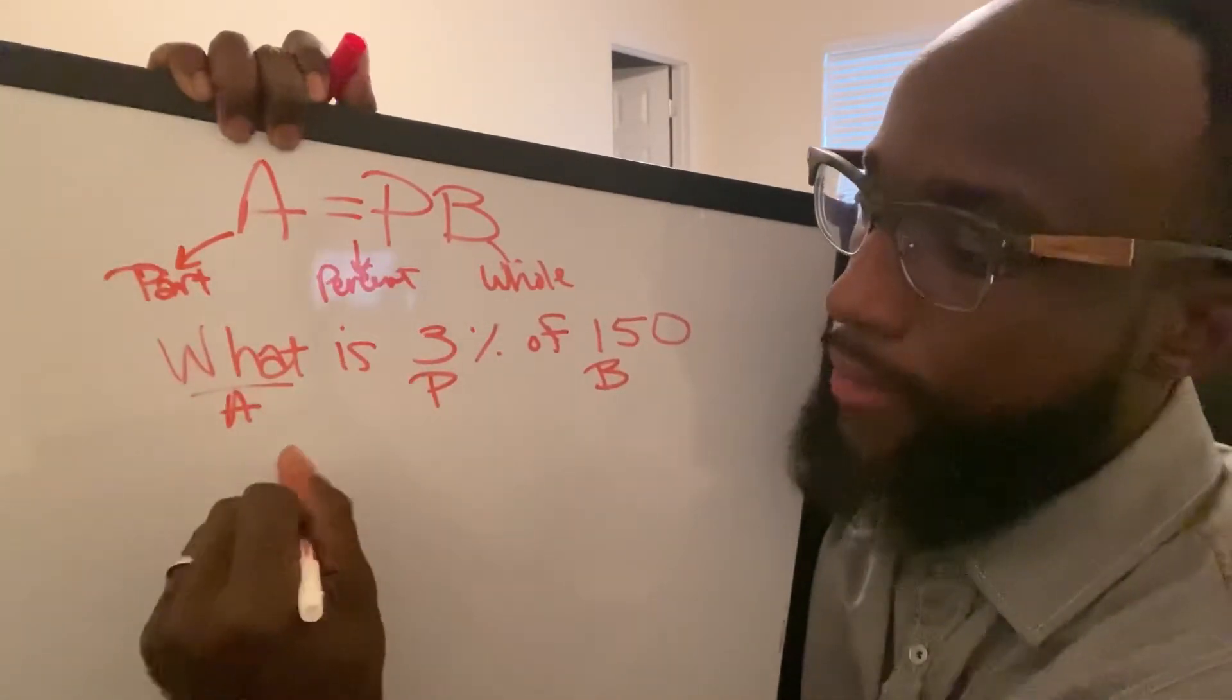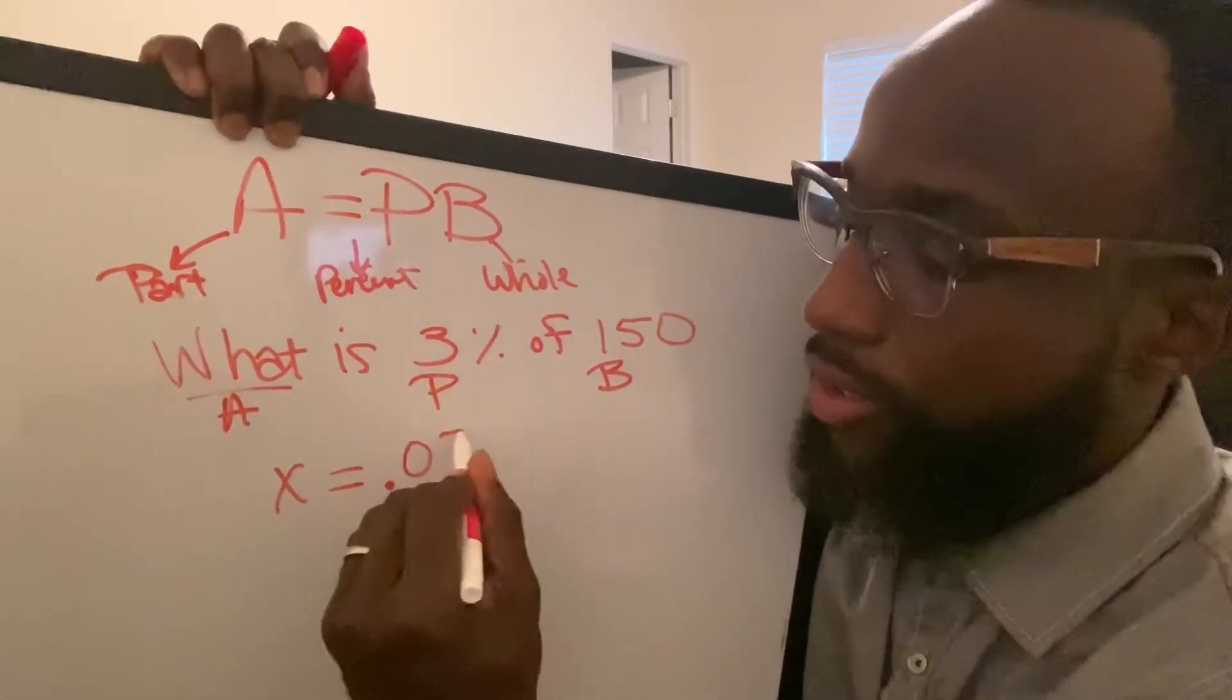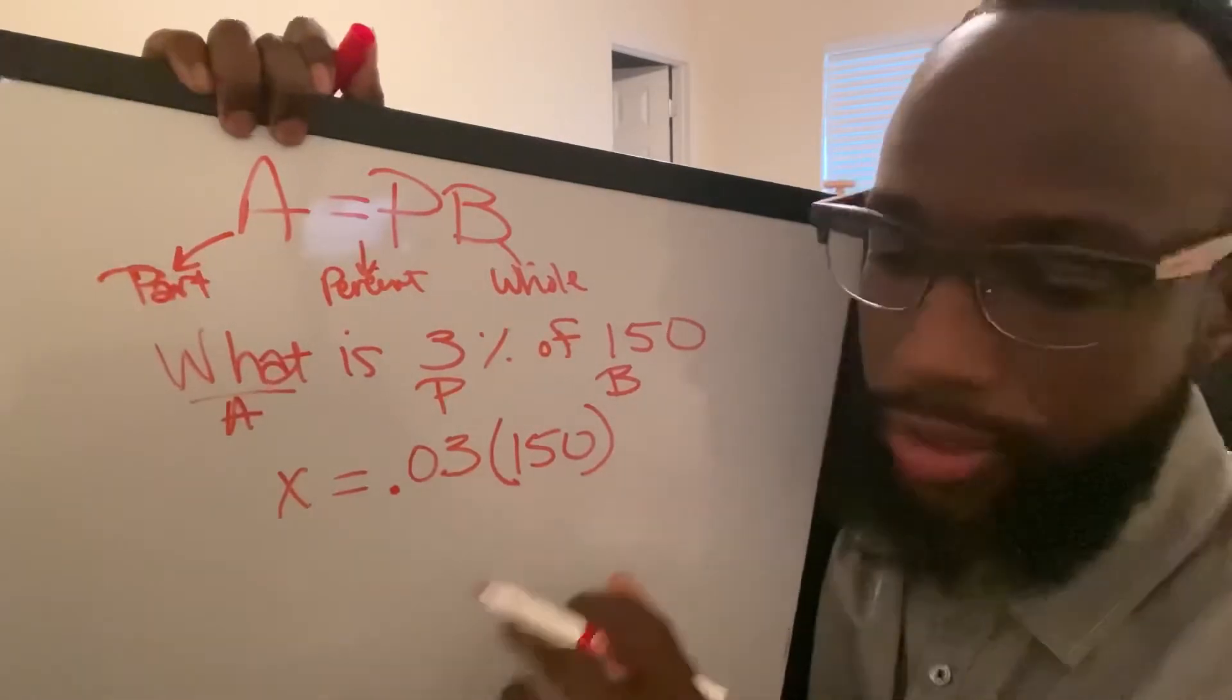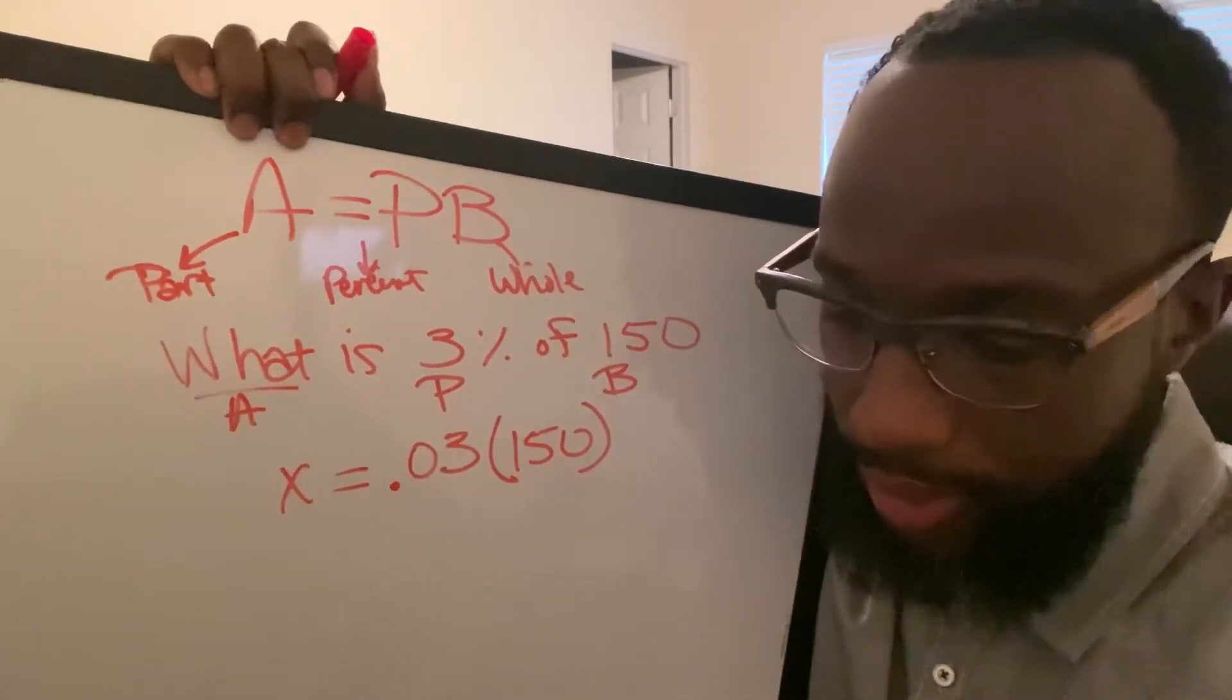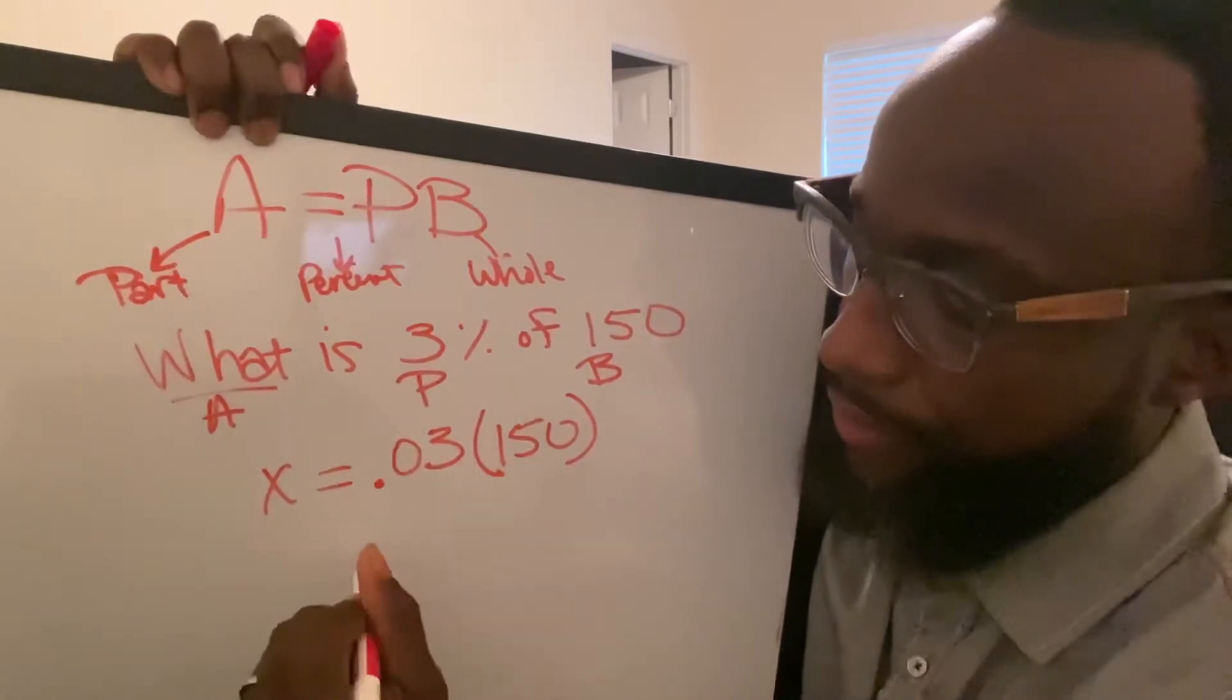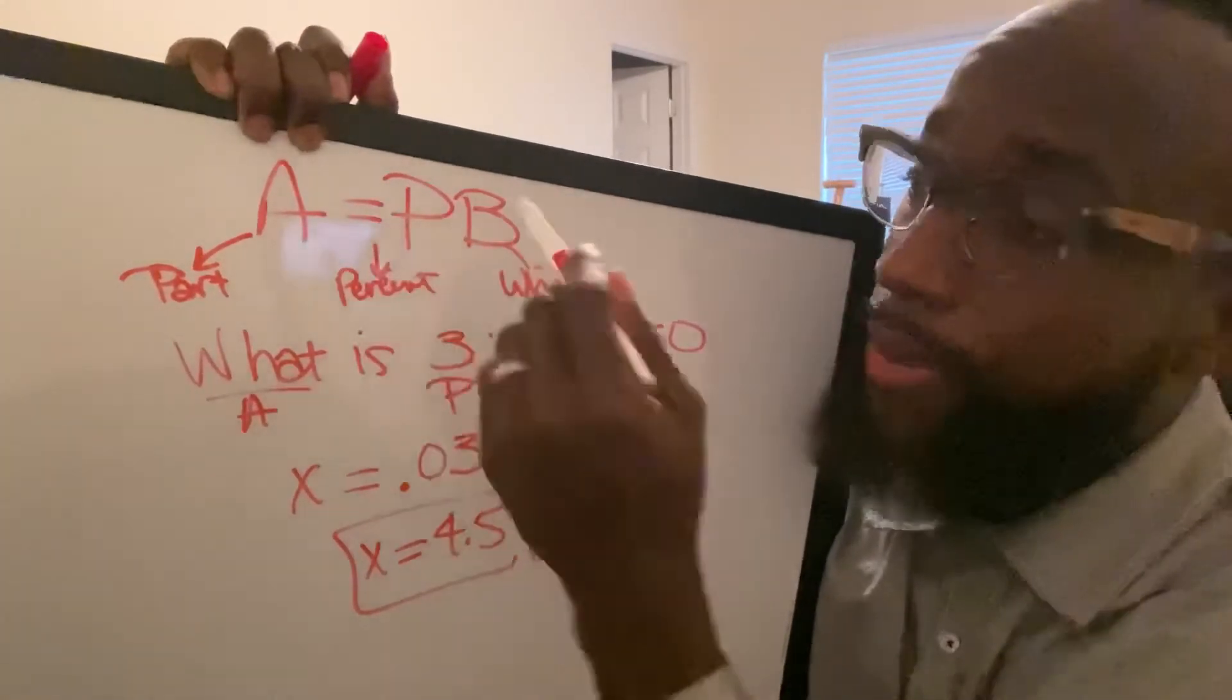So it's going to be A. We don't know it, so it's going to be X times 3%. We have to change 3% to a decimal, so it's going to be 0.03 of 150, the whole number. We're basically taking 3% of the whole 150. Let's do it. 0.03 times 150 is 4.5. So X equals 4.5. That's using the APB formula.